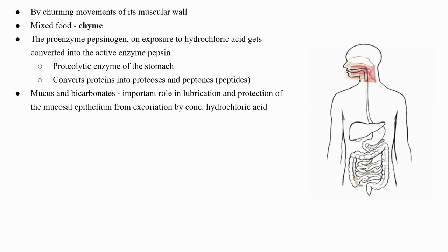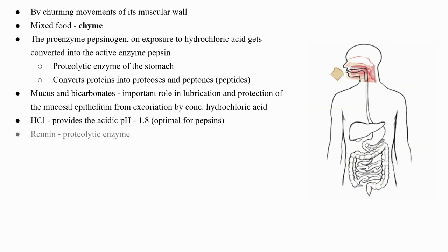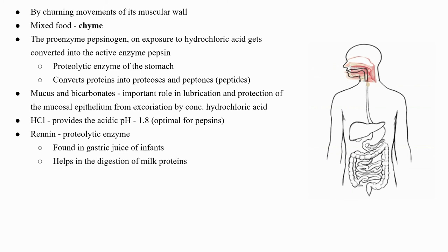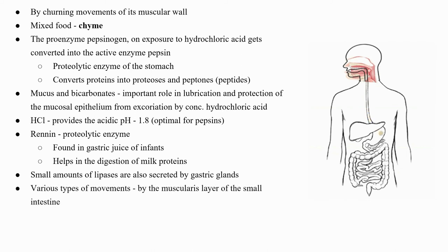Pepsin converts proteins into proteases, peptones, and peptides. The mucus and bicarbonates present in the gastric juice play an important role in lubrication and protection of the mucus epithelium from excoriation by the highly concentrated HCl, which provides the acidic pH of 1.8 optimal for pepsin. Renin is a proteolytic enzyme found in the gastric juice of infants which helps in the digestion of milk proteins. Small amounts of lipases are also secreted by gastric glands.